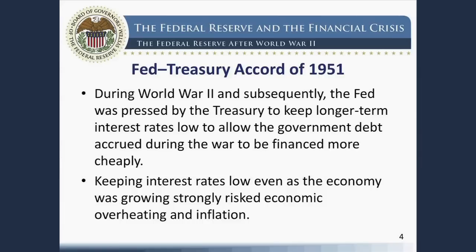After the war ended, the debt was still there. The government was still worried about paying the interest on the national debt, which was at a very high level. So there was considerable pressure on the Fed to keep interest rates low even after the war. But keeping rates low as the economy is growing and recovering risks an overheating economy and inflation. By 1951 the Fed was very concerned about inflation prospects, and after a series of complex negotiations, the Treasury agreed to end the arrangement and let the Fed set interest rates independently to achieve economic stability. That agreement was called the Fed Treasury Accord of 1951.